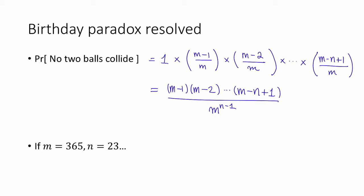If you work this out for our example of birthdays, with m = 365 and n = 23, this probability is about 0.4927. So that means that if you have 23 people, with probability about one half, two of those people will share a birthday. The birthday paradox wasn't so much of a paradox as we just hadn't done the math yet, but at least it was a nice warm-up.